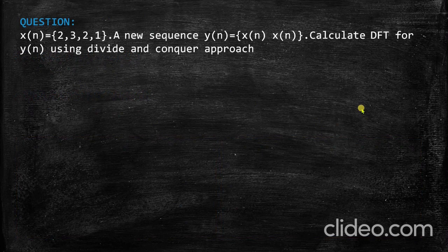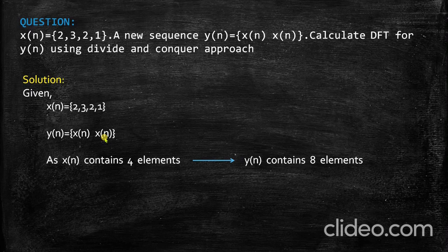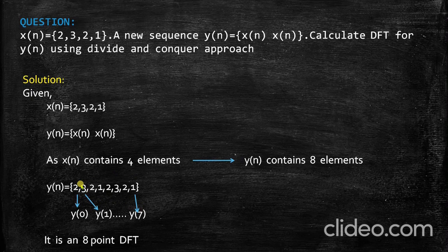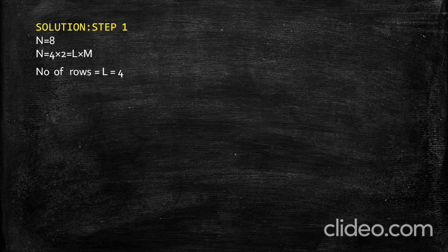Now let us look at a numerical example. Given small x(n) contains four elements: 2, 3, 2, 1. A new sequence y(n) is defined as x(n) repeated two times. Since x(n) has four elements, y(n) contains eight elements: 2, 3, 2, 1, 2, 3, 2, 1. So it is an 8-point DFT, where y(0)=2, y(1)=3, y(2)=2, and so on up to y(7)=1. In divide and conquer, N=8 is represented as L times M, giving L=4 and M=2, so there are 4 rows and 2 columns.